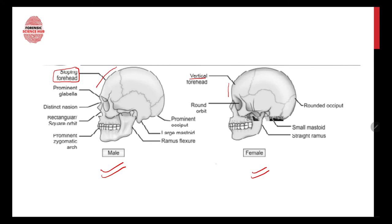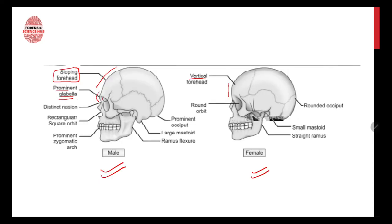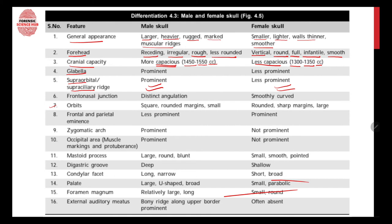Glabella is the area present between the eyebrows and eyes. It is quite prominent in males, as visible in the image, whereas it is not prominent in females. The supraorbital ridge — supra meaning above the orbits, which are the bony sockets of the skull where the eyes are located — is prominent in males and less prominent in females.